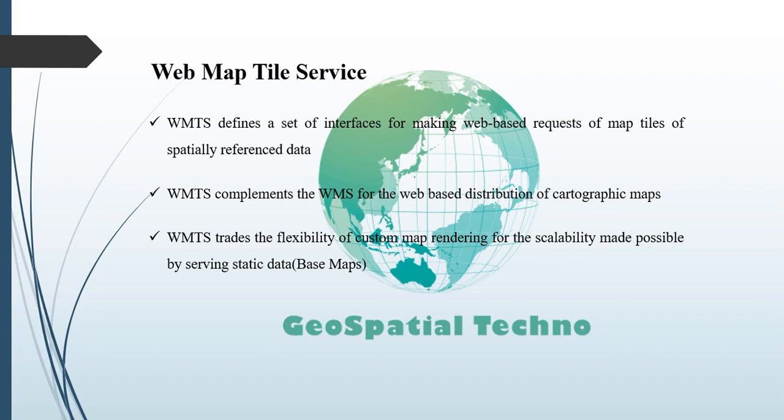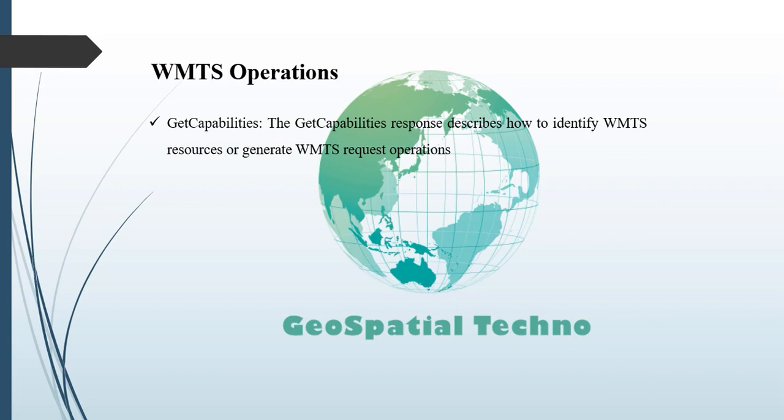The fixed set of tiles allows for the implementation of a WMTS service using a web server that simply returns existing files. It also enables the use of standard network mechanisms for scalability such as distributed cache systems. WMTS specifies several operation types, two of which are required in a compliant WMTS implementation and another which is optional. The GetCapabilities response is characterized in a service metadata document describing how to identify WMTS resources or generate WMTS request operations. The primary content includes TileMatrixSet summary information, bounding boxes, supported CRS, whether a well-known scale set is available, and TileMatrix data about various levels.